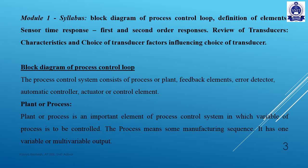So basically, there is a process control system. There is a process, a manufacturing process, a manufacturing unit, and a plant. There are feedback elements, an error detector, automatic control, and an actuator. There is a control element. If we have a plant, we control the process.